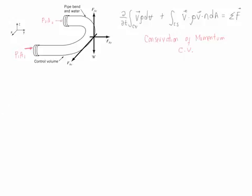Now we need to solve the Reynolds Transport Theorem for conservation of momentum. Because this is a steady case, the first term is equal to zero. The second term can be evaluated based on the velocities at each of the control surfaces. Since velocities are constant at each control surface, we can rewrite this term as the summation of velocities times the mass flow rate at each control surface, and that is equal to the summation of forces. We do this in terms of different axes, so let's start with the y-axis.